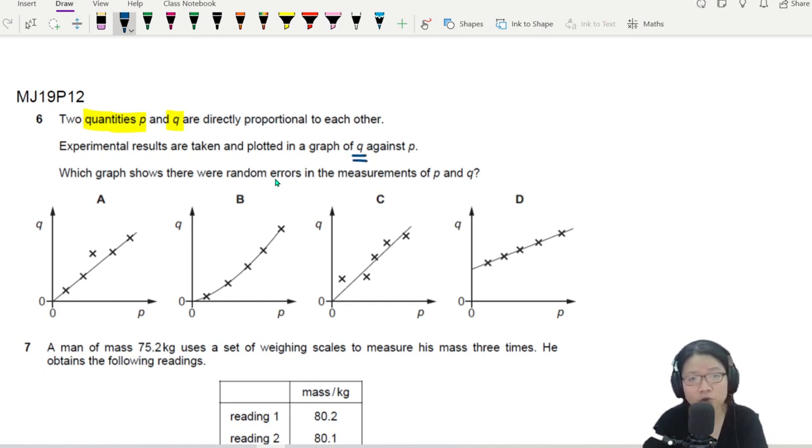We plot a graph of Q against P. Now, if you think about Q and P, if P and Q are proportional, you should get a straight line passing through the origin.